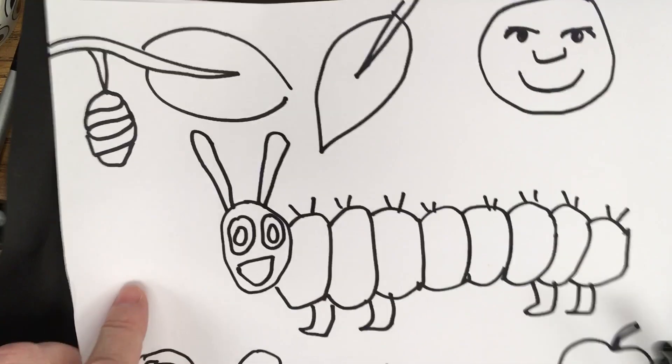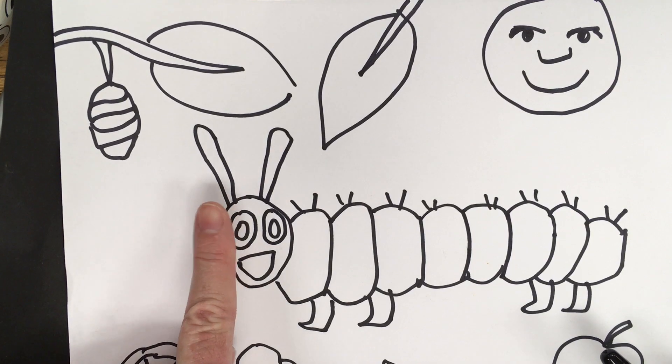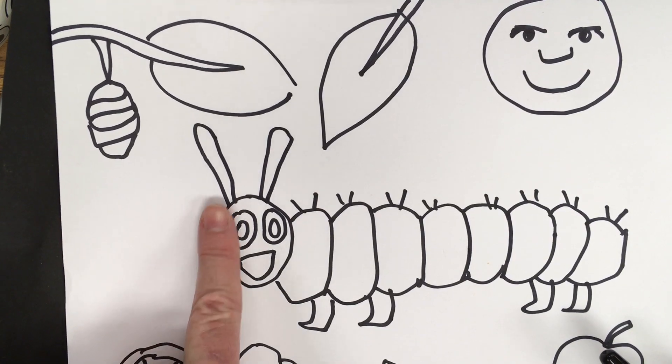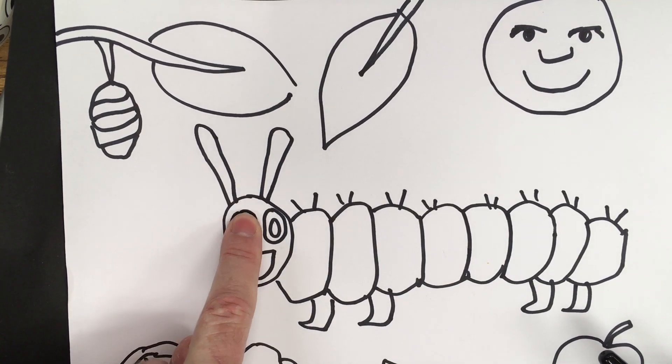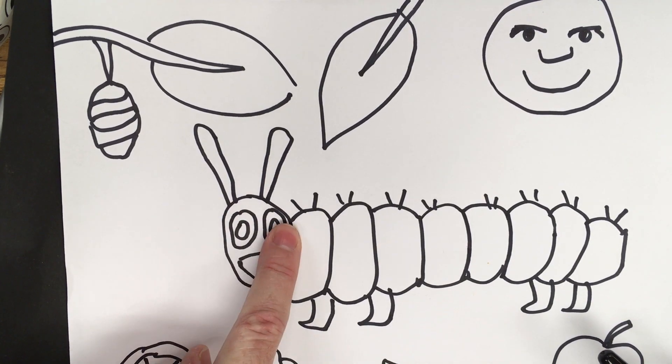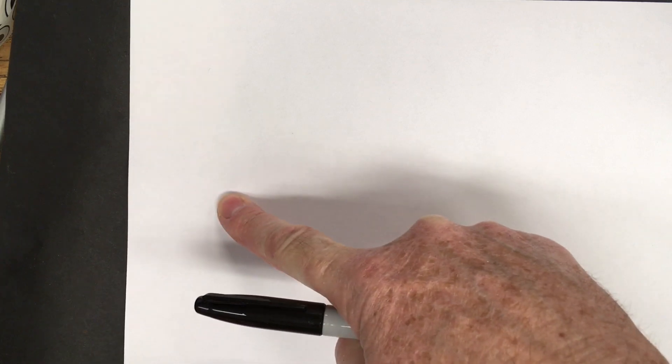Our first step, if you look at the caterpillar, we need to leave a little bit of room for his head here. So we're going to come off the side, jumping over a little bit. Then we're going to do the two circles for the eyes first. We're coming to the edge of our page, top, bottom, find the edge and just jump over a little bit.